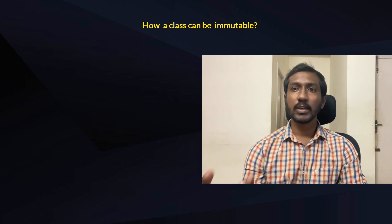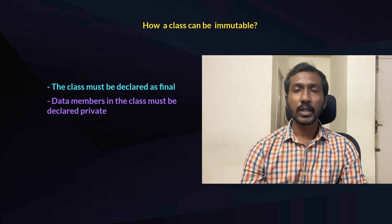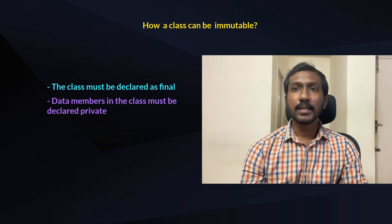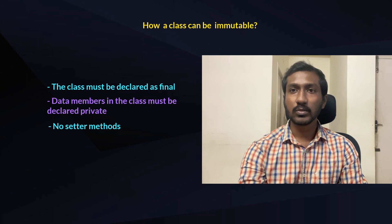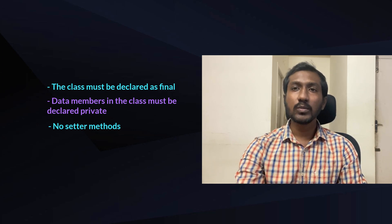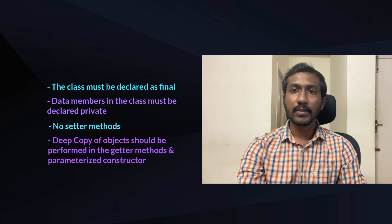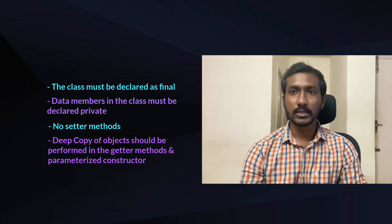How do we create an immutable class? First, make the class final. All data members should be private, accessible only via getter methods, with no setter methods. In the constructor and getter methods, perform a deep copy of any mutable members — for example, if the class contains an array, copy the array and return the copy so the original data cannot be changed.